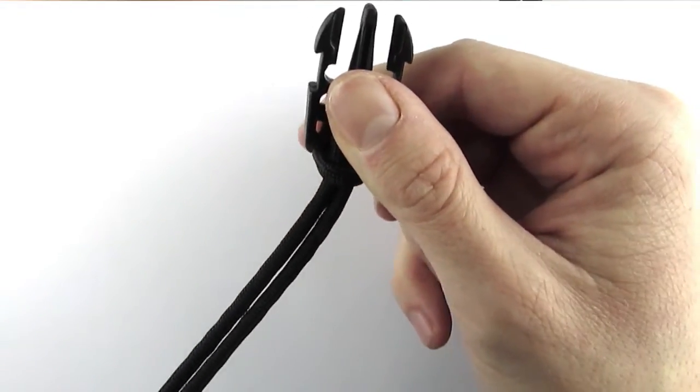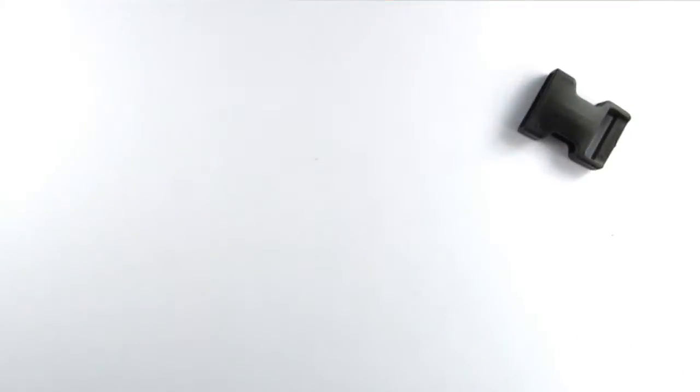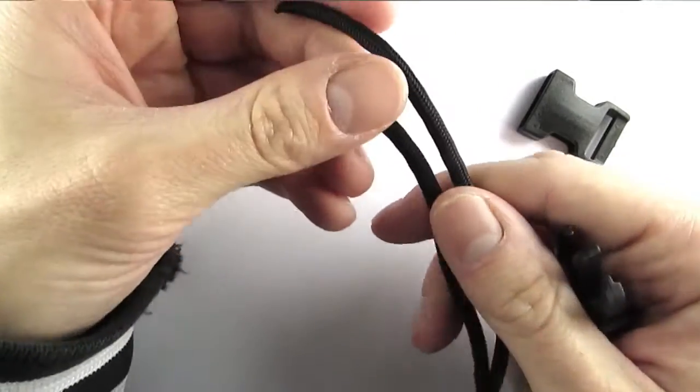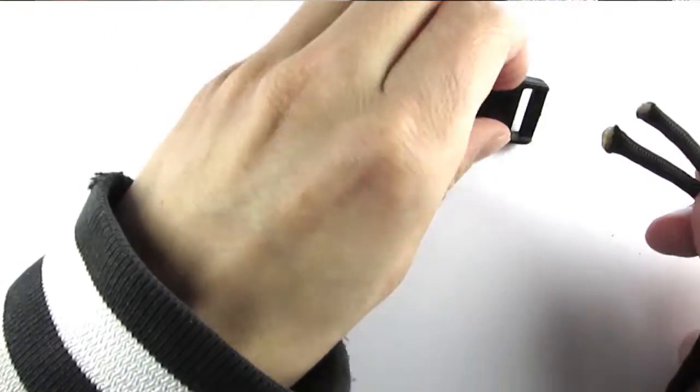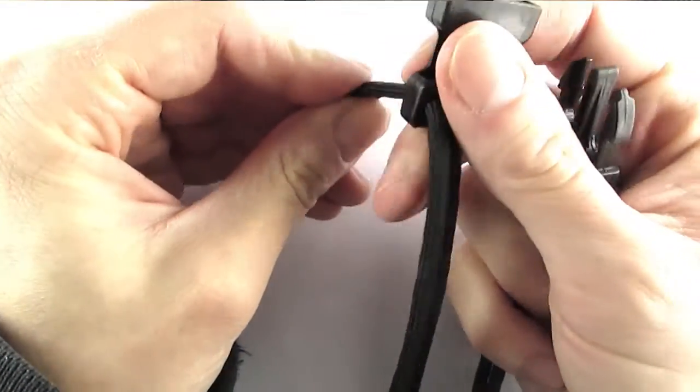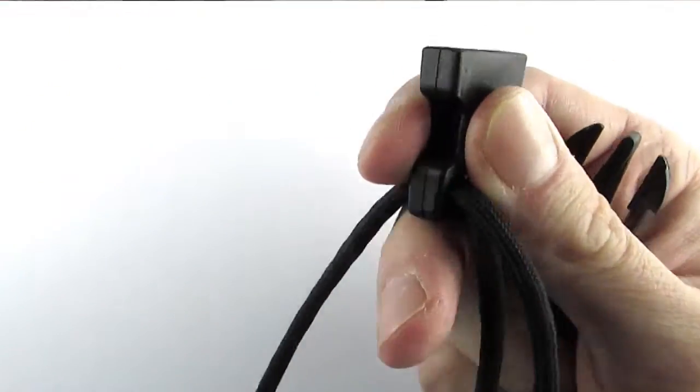We're going to do that by taking our ends and feeding them through the top of the other part of the buckle, and then pull until we get close to the other side.